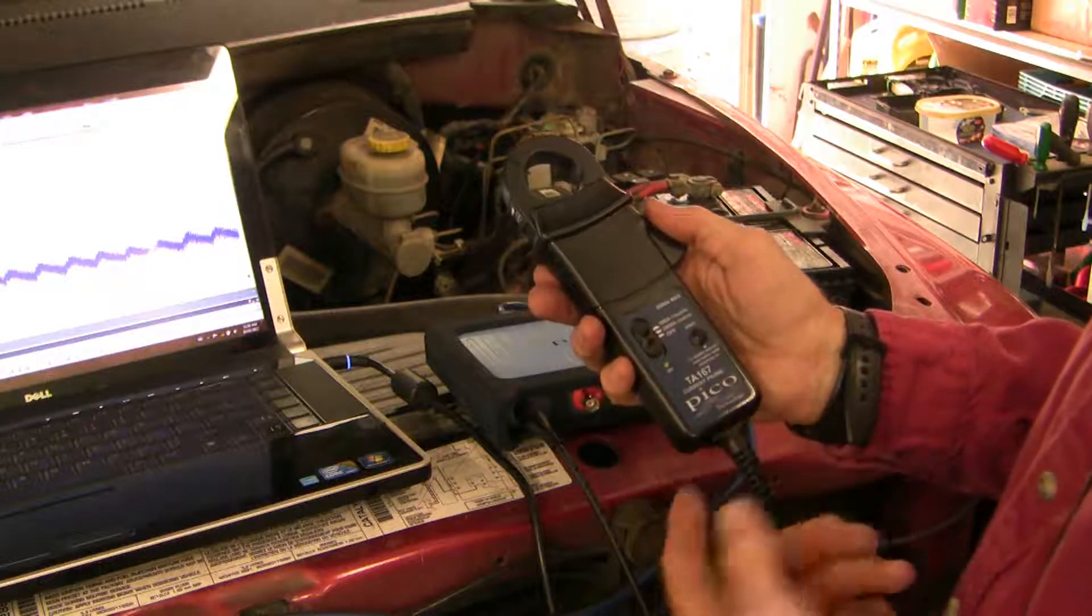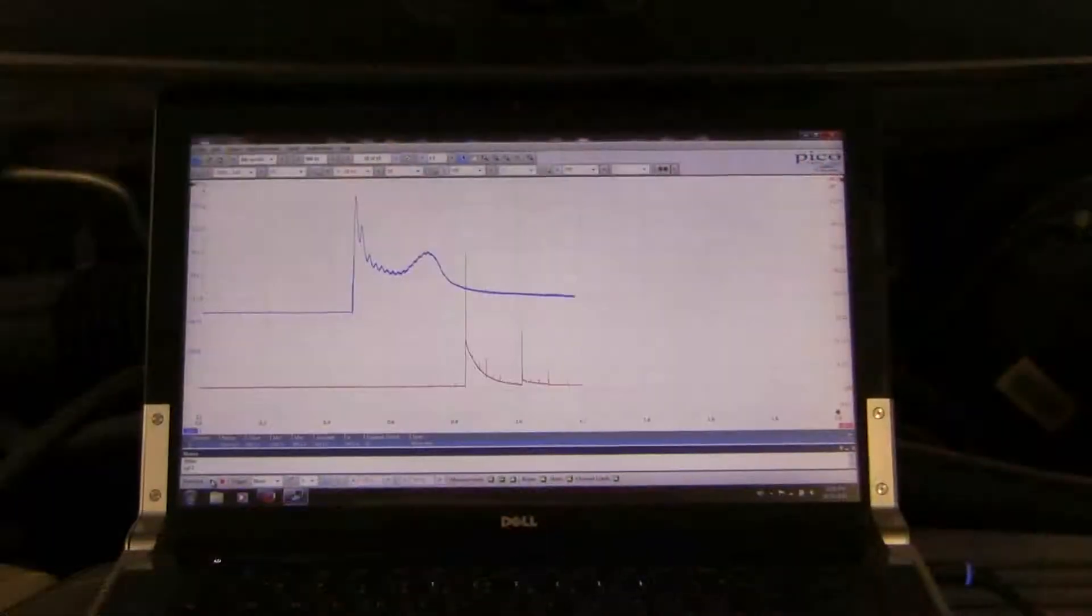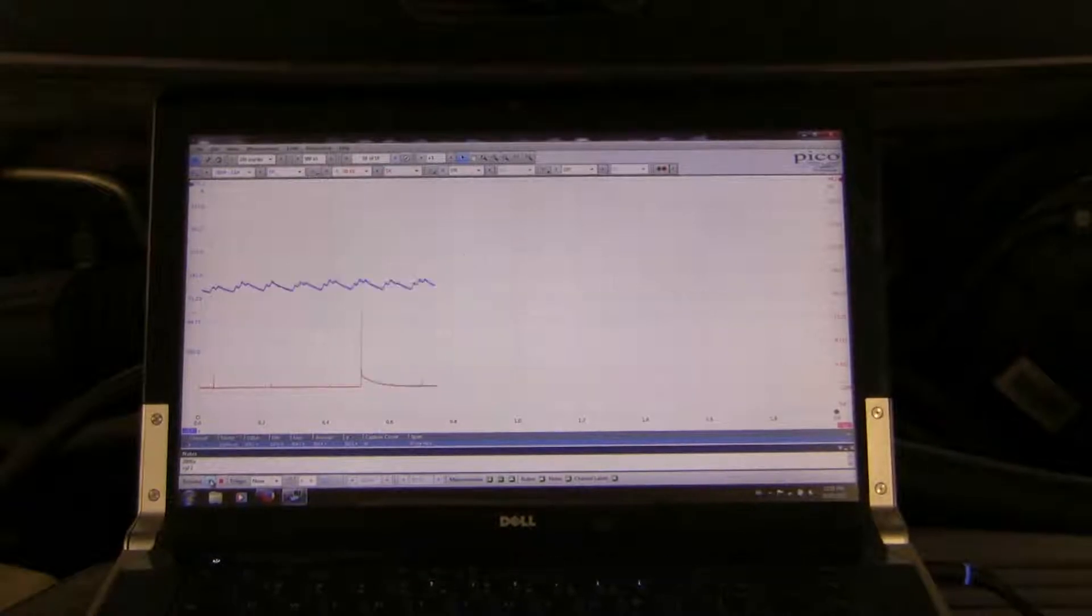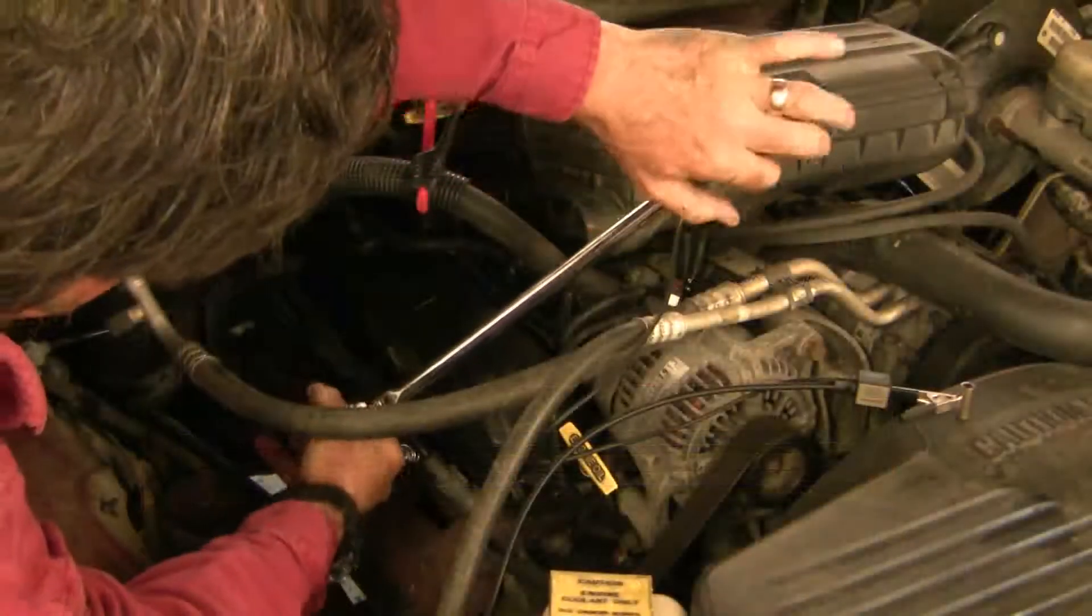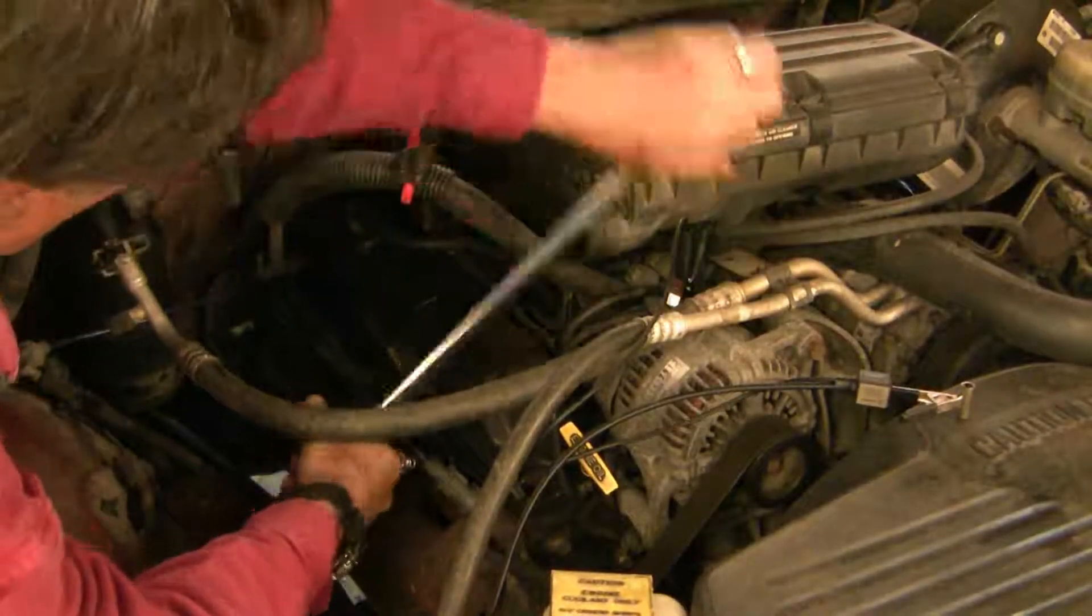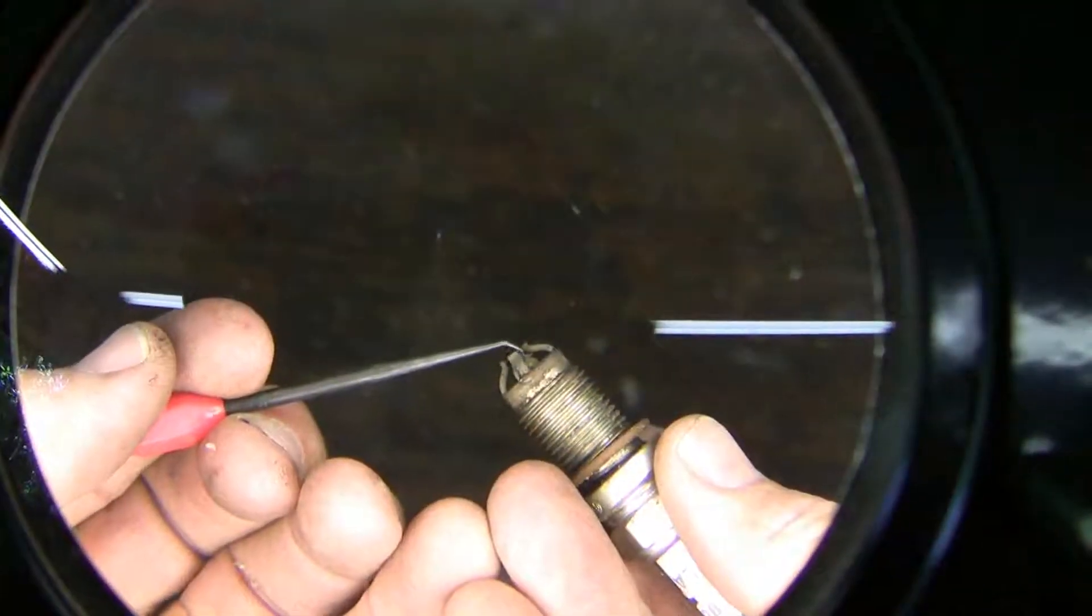This is the first of a multi-part series exploring the use of a lab scope in automotive diagnostics. In this first video, we'll start with an historical introduction, followed by a demonstration of how to do a very fast indirect compression test using a Picoscope.